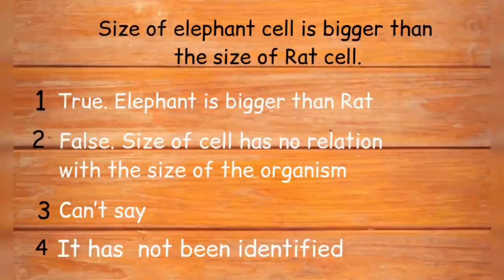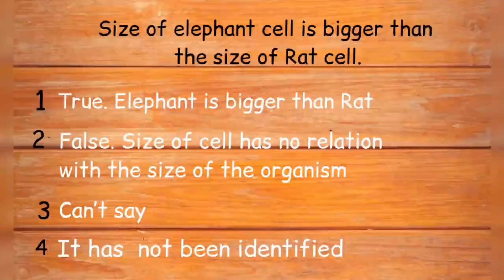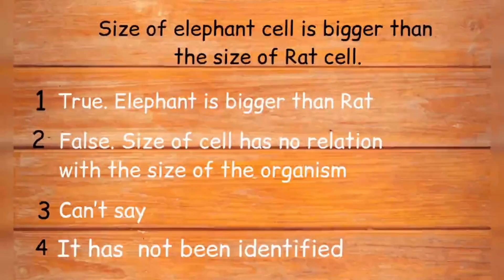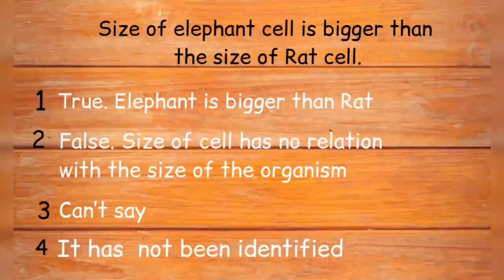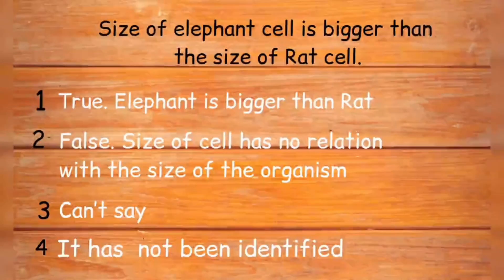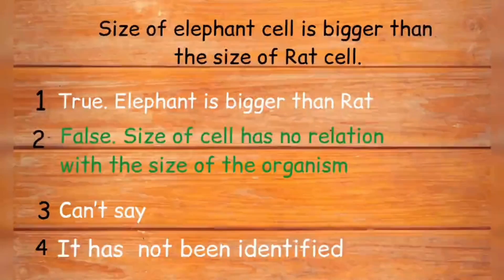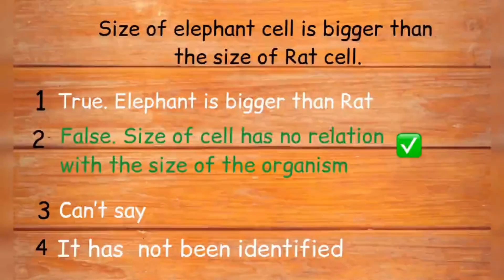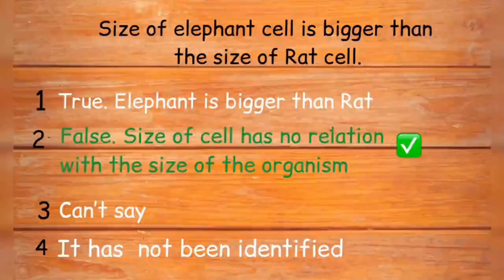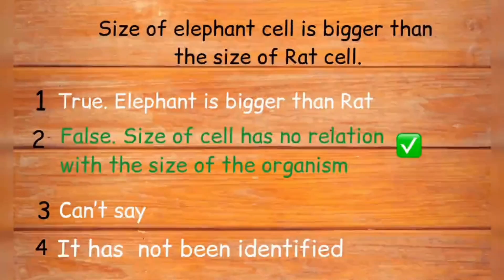Is the size of an elephant cell bigger than the size of a rat cell? Option one says true, because the elephant is bigger than the rat. Option two says false, because the size of a cell has no relation to the size of the organism. Actually, the size of a cell doesn't depend on the size of the organism. Whether it is a cell of an organism as big as an elephant or as small as a rat, cell size has nothing to do with organism size. We go with option two.